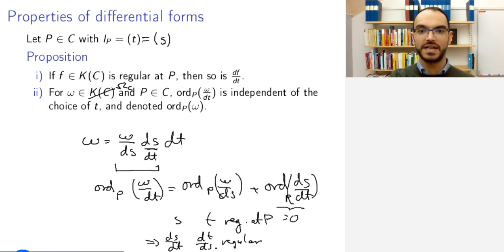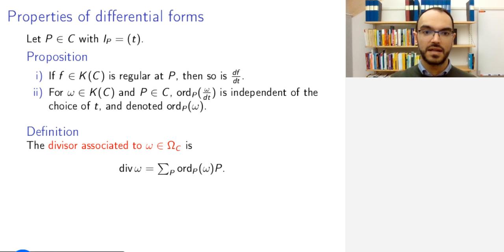And so, this means that the order of ω doesn't depend on the choice of uniformizer. It really just depends on ω and p. And therefore, I can define the divisor associated to ω in exactly the same way as I did for rational functions. And doing so, I get something that is well-defined, and this will also only be non-zero at a finite number of points, for similar reasons as before.